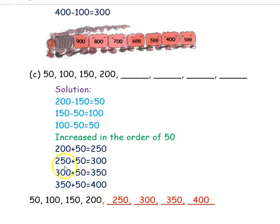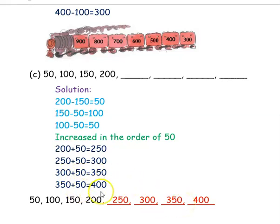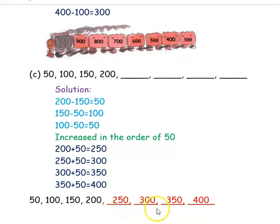Then if you add 50 to 250, you will get 300. For the next blank, you add 50 to 300 — so 300 plus 50 is 350. Then to find the last blank, you add 50 to 350 — so 350 plus 50 is 400. So the missing numbers in the blank are 250, 300, 350, and 400.